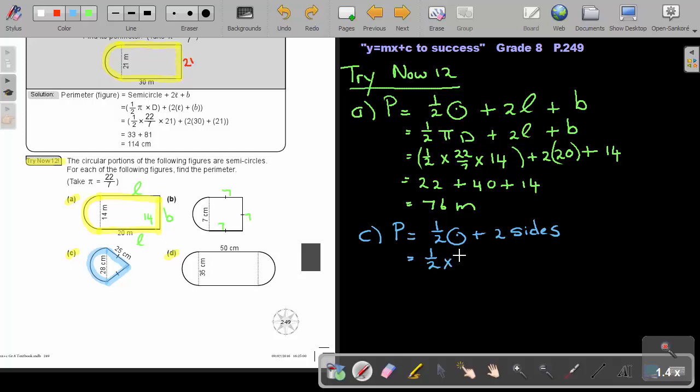So half a circle will be half, times pi, times the diameter, plus the two sides. And if I just substitute the values, take pi still as 22 over 7, take the diameter as 28, plus two of the sides, and what will the sides be? I'm going to say 25.